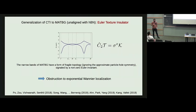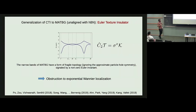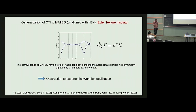Now I want to generalize the story to TBG unaligned with HBN—I'll call the generalization the Euler Texture Insulator (ETI). In TBG unaligned with HBN, the system has C2 symmetry and therefore also C2T symmetry. With C2T symmetry, the narrow bands in a single valley of TBG are connected by two Dirac points with the same chirality and same winding. This tells us the bands have a non-trivial fragile topology signaled by a non-zero Euler invariant, giving an obstruction to exponentially Wannier-localizing these two bands.